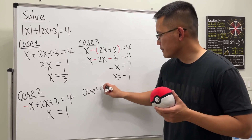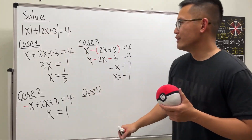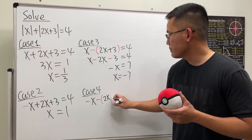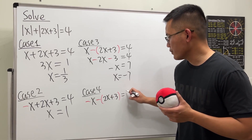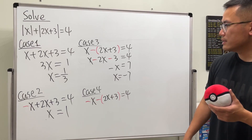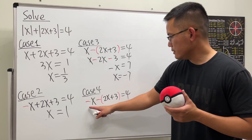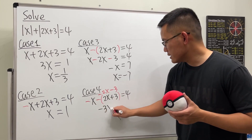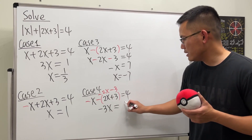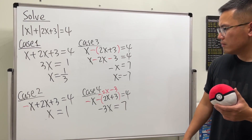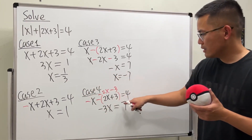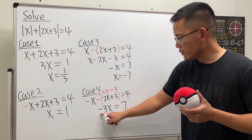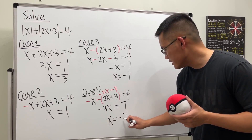Case 4: negate both terms. We get negative x minus (2x plus 3) equals 4, which expands to negative x minus 2x minus 3 equals 4, giving negative 3x minus 3 equals 4. Adding 3 to both sides gives negative 3x equals 7, and dividing by negative 3 gives x equals negative 7/3. So it looks like we have four answers, but only two are legitimate.